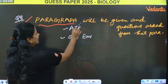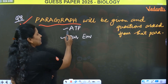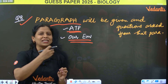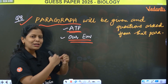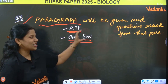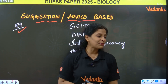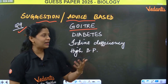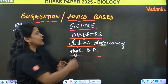Question number 8 — you will be given a paragraph. As per the new model paper this is very, very important. A particular paragraph will be given — it could be ATP-related or environment-related. From that paragraph, they will ask you two questions worth 2 marks each. It is very easy — read the paragraph carefully and just copy-paste the answers from the paragraph. It is like a comprehension passage. Question 9 — suggestion or advice-based questions will be there. You will get questions on goiter — how to prevent goiter, advice to sister, elders and friends about diabetes, iodine deficiency, and high BP — all these are important 2-mark advice-based questions.